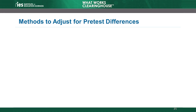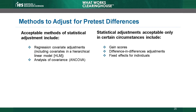What statistical adjustments does the WWC consider appropriate? Without getting into any technical details of statistical adjustment methods, acceptable methods of statistical adjustment include a regression-covariant adjustment, including a hierarchical linear model or analysis of covariance.